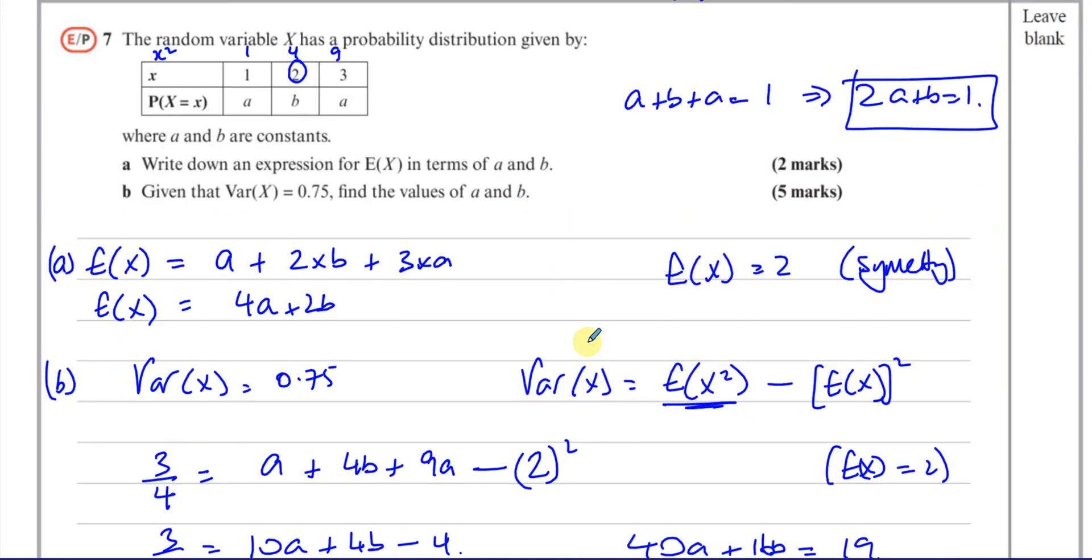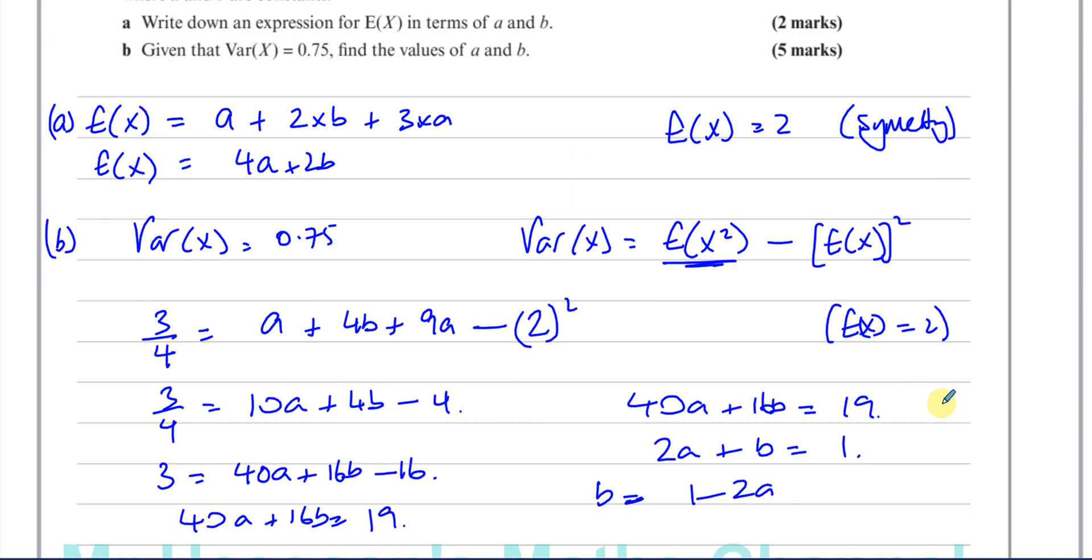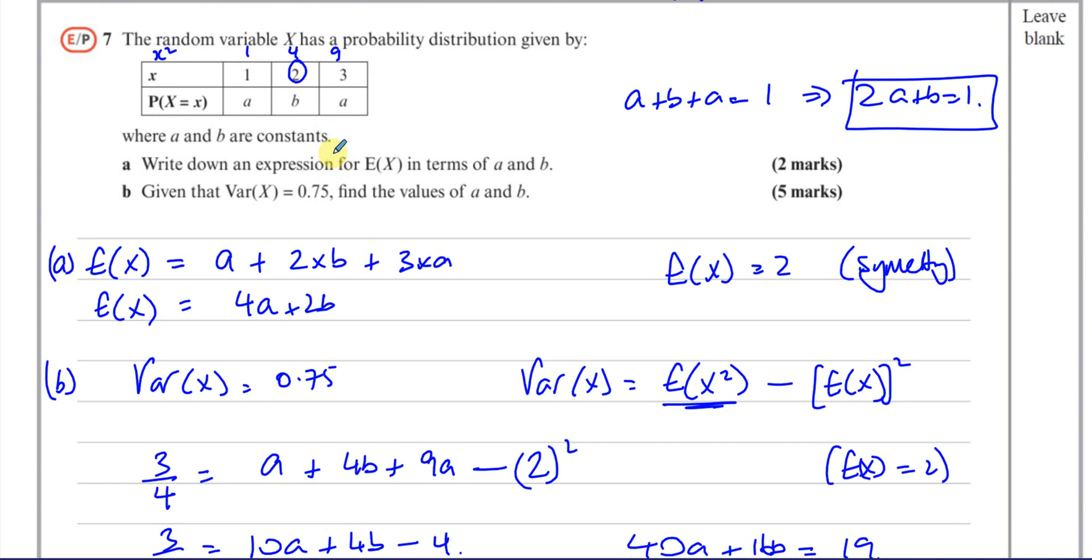But it's still doable, even if you didn't understand that. We would have ended up with this being, instead of 2, we'd have 4a plus 2b all squared. So then we'd end up with a quadratic with a and b in it, and we'd have to use substitution, replacing the b's with 1 minus 2a. You'll end up with a more complicated answer, and it should give you the right answer in the end as well, but it's much easier if you can spot that.